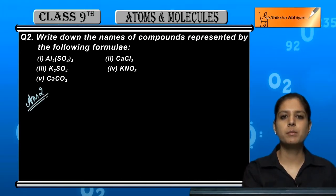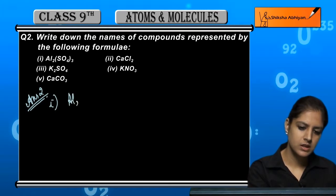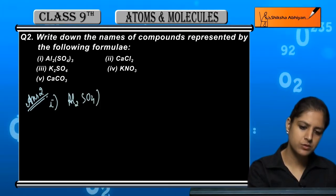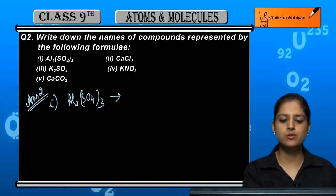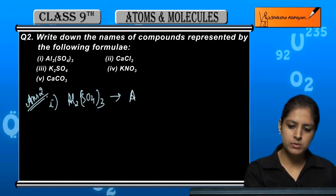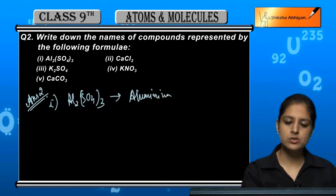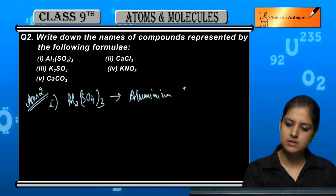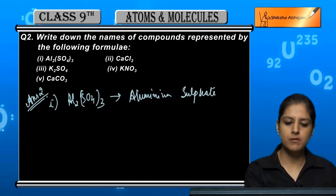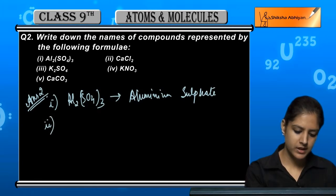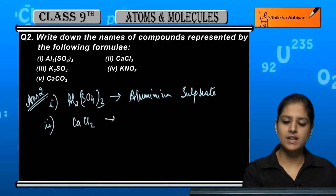First is Al2(SO4)3. Al is aluminum and SO4 is sulphate. This compound's name is aluminum sulphate.